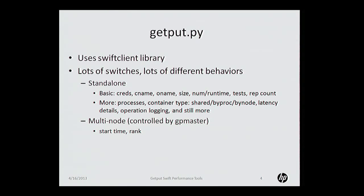In standalone mode it really only needs about half a dozen switches. You tell it: I want to write objects with this name to the container with that name, here's how many, here's the size, and here's the kind of test — gets, puts, or deletes. There are additional switches needed when running on multiple nodes, so each node can identify what container to write to.